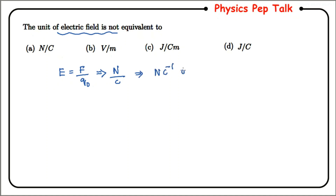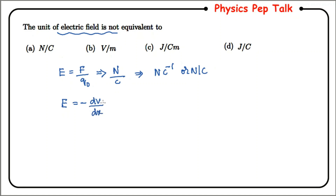Therefore, the electrical field unit is Newton per Coulomb, or Newton Coulomb to the power of minus one. Again, in the second chapter on electrostatic potential and capacitance, we have come across the expression: electrical field is equal to negative potential gradient.